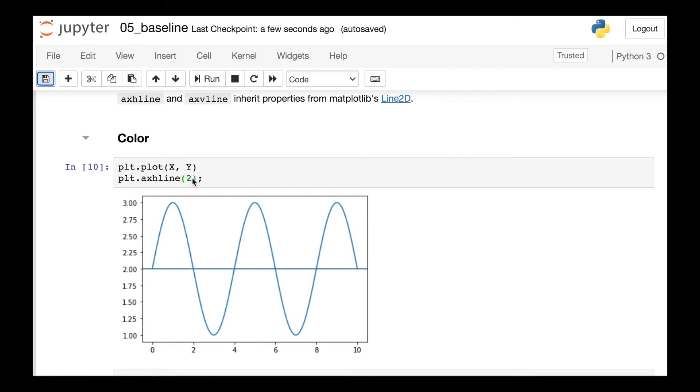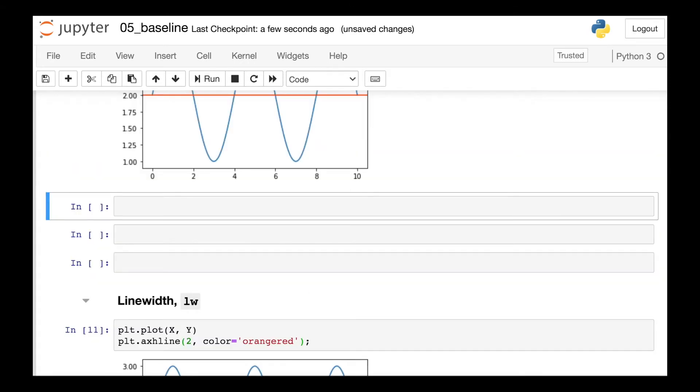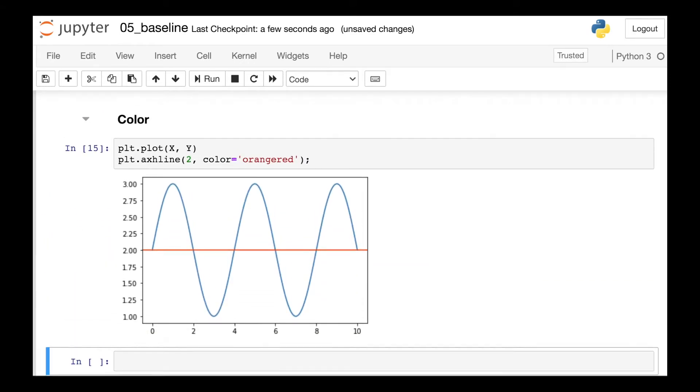First of all, we can change the color of this line by just referencing the color property, and then we can pass in whatever Matplotlib color we'd like. So here we'll change this to a nice orange red shade.